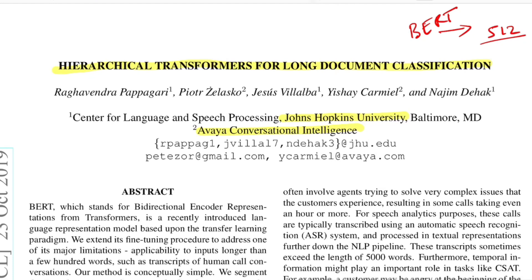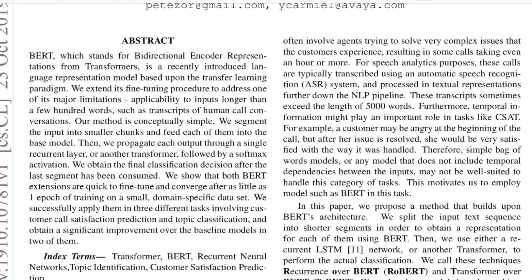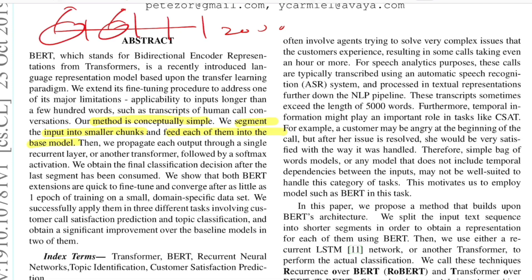This paper came out a little earlier than those, so they just use BERT and tried to use some hierarchical layers with windowing techniques for dealing with long documents. The method is conceptually simple: they segment the input into smaller chunks and feed each of them into the base model. So if you have a longer text of say 2000 words, they make multiple chunks and each goes to the BERT model, after which they stack a single transformer or recurrent layer followed by a softmax for classification.